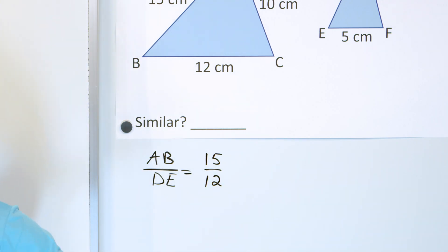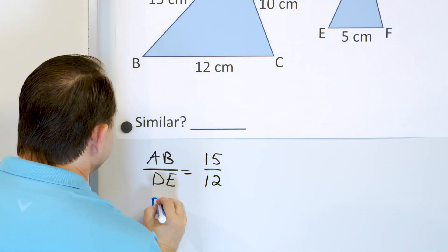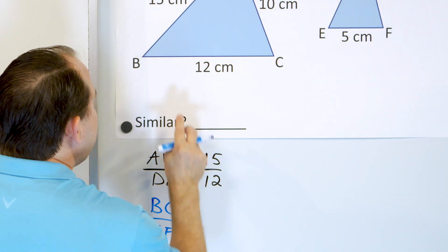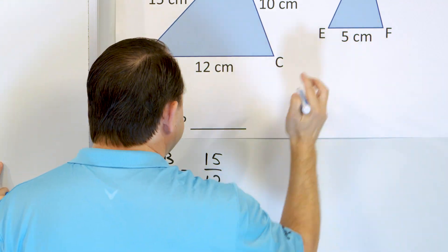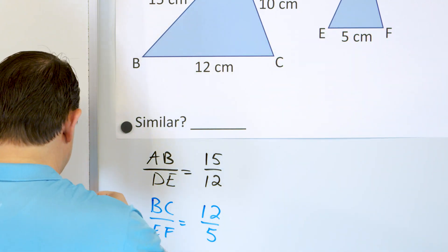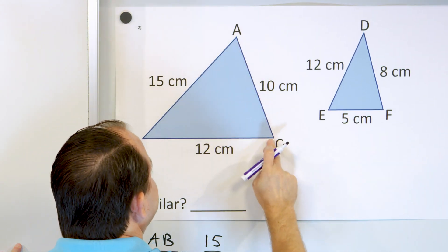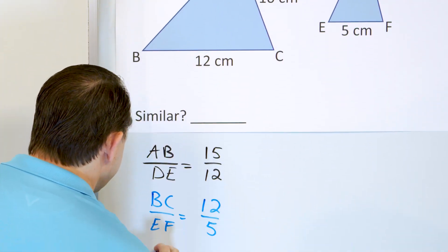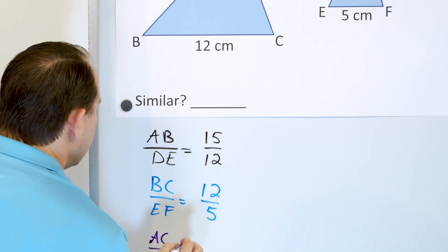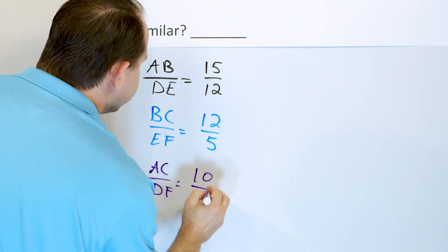Let's move on to BC compared to EF. BC is 12 and EF is 5, so we get 12 over 5. And finally, AC compared to DF: AC is 10 and DF is 8, giving us 10 over 8.